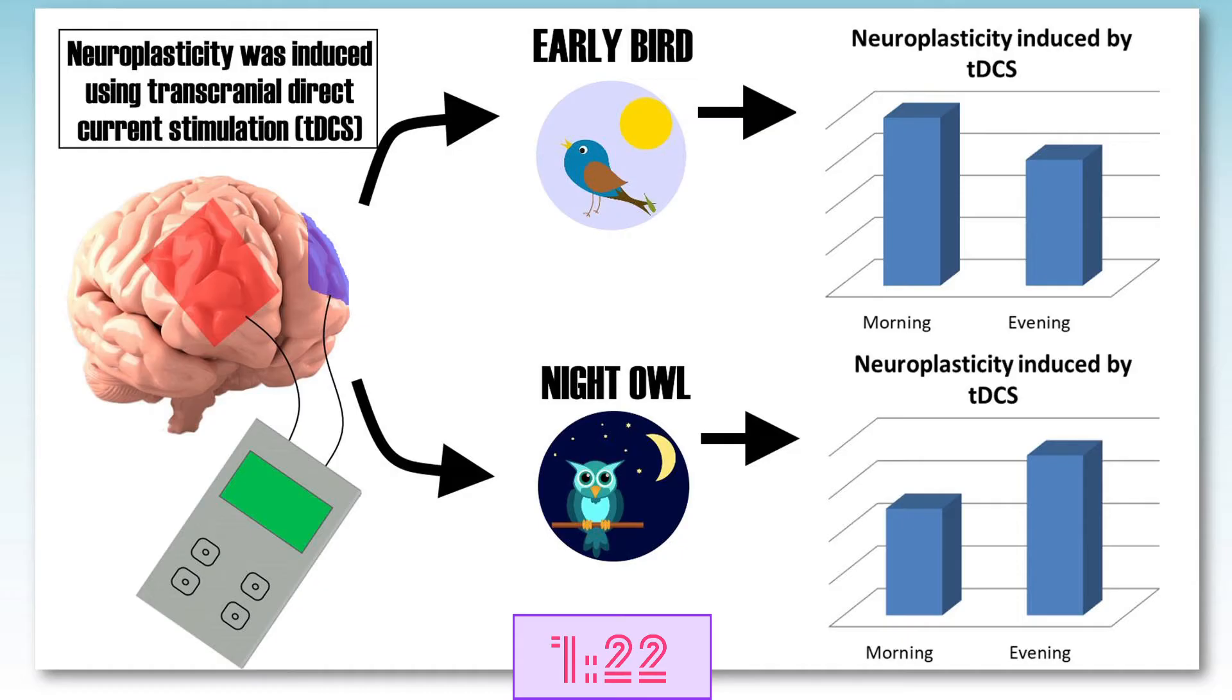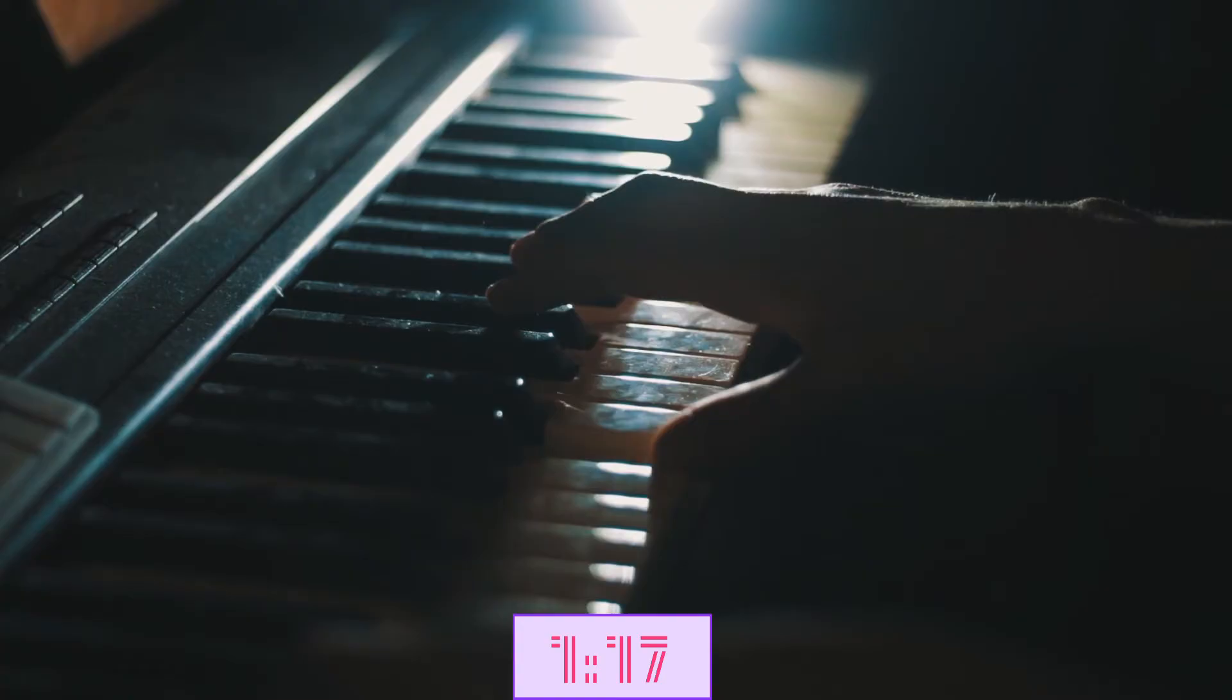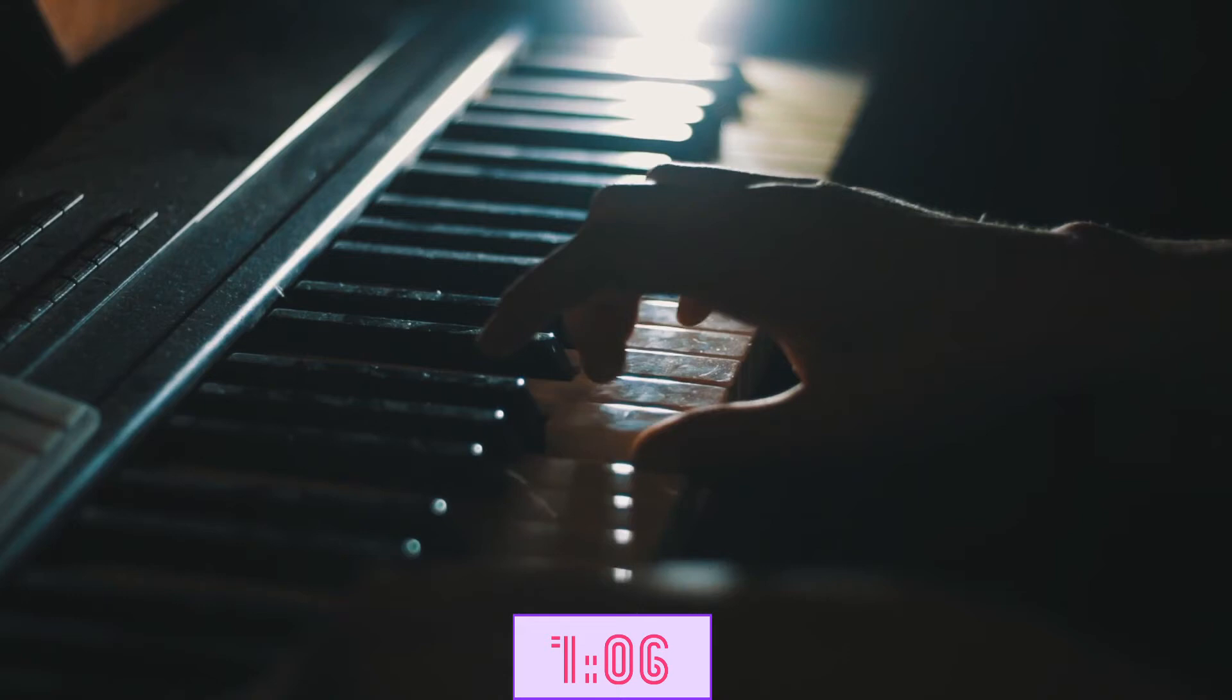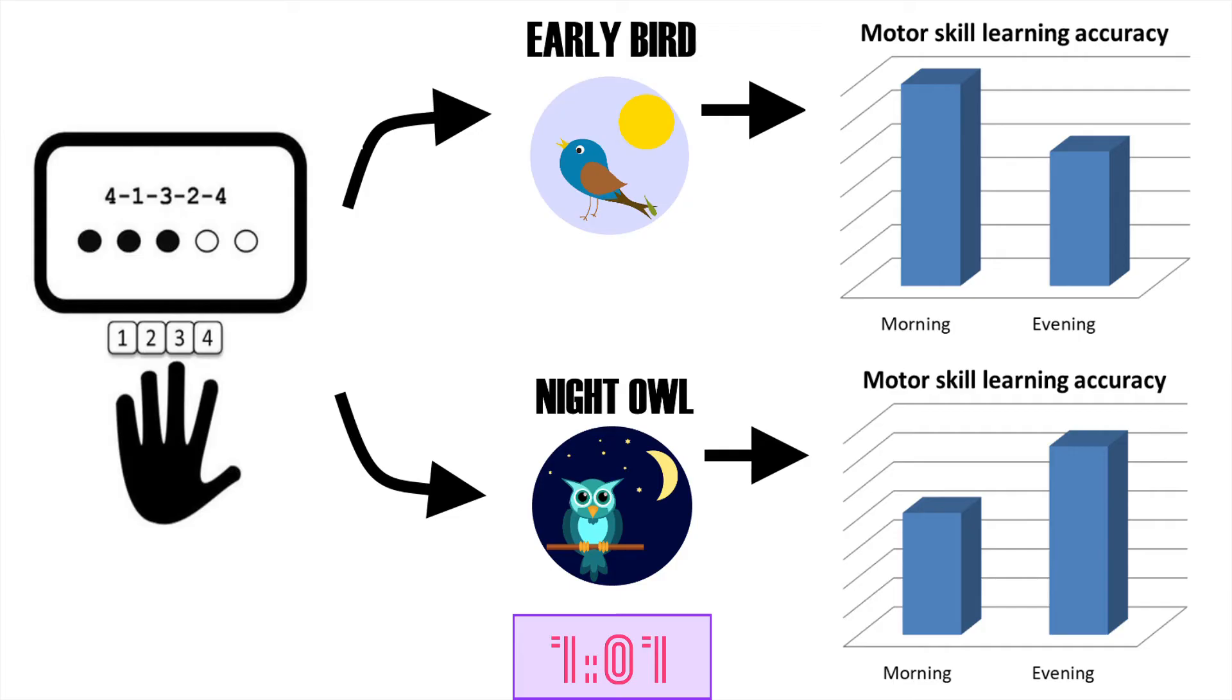To confirm these results on neuroplasticity, they actually tested the learning of new motor skills and cognitive abilities. They used a task where people had to learn a sequence of finger taps, reminiscent of learning a piano piece. This movement skill was learned faster and more accurately at a person's preferred time. Also, the brain responses to this movement learning, which were measured by electroencephalography, were larger at a person's preferred time.